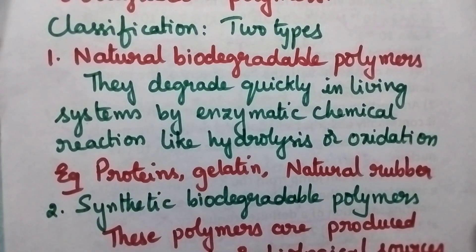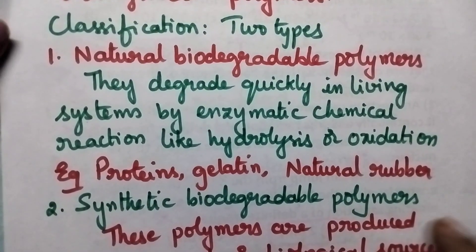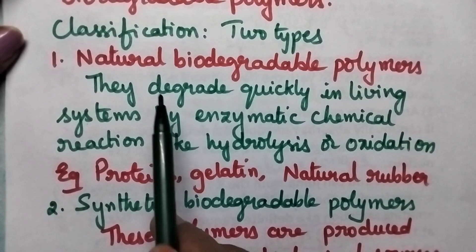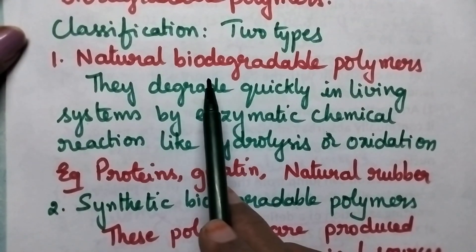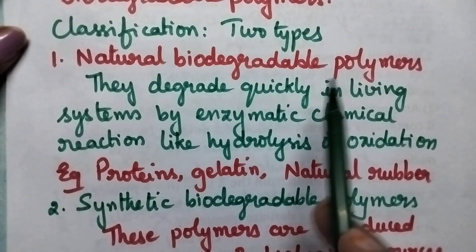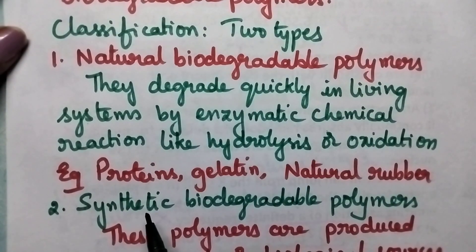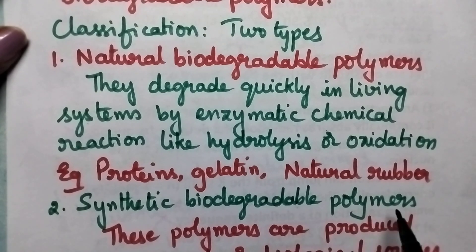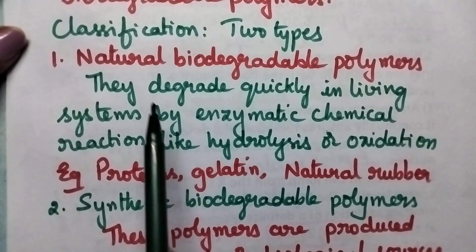Coming to the classification of biodegradable polymers, they can be classified into two types: one is natural biodegradable polymers and the other one is synthetic biodegradable polymers.